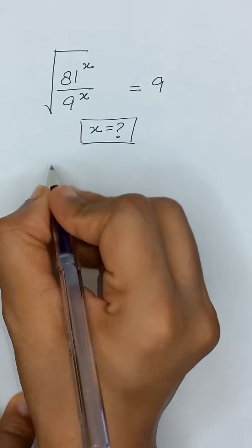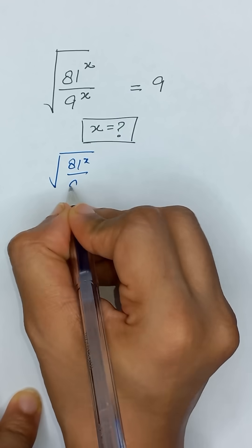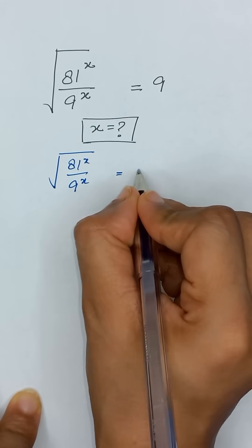First of all, we will write this given equation, which is 81 to the power x divided by 9 to the power x is equal to 9.